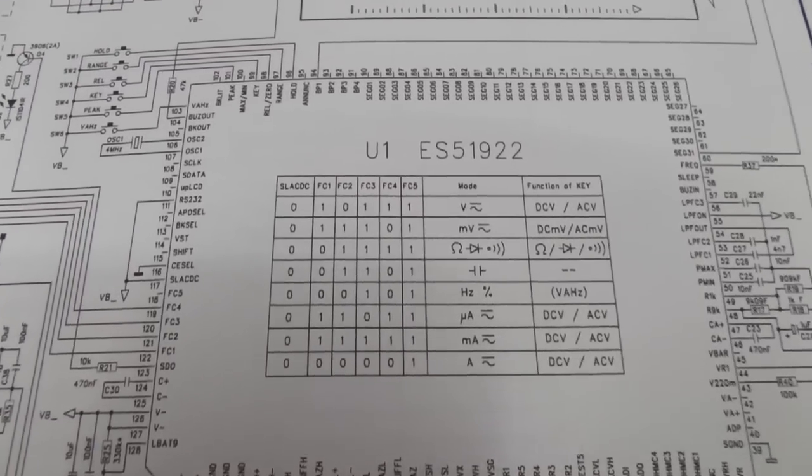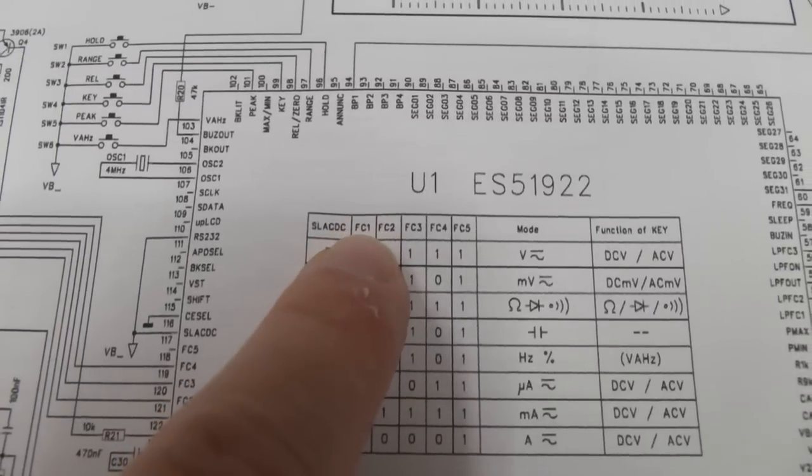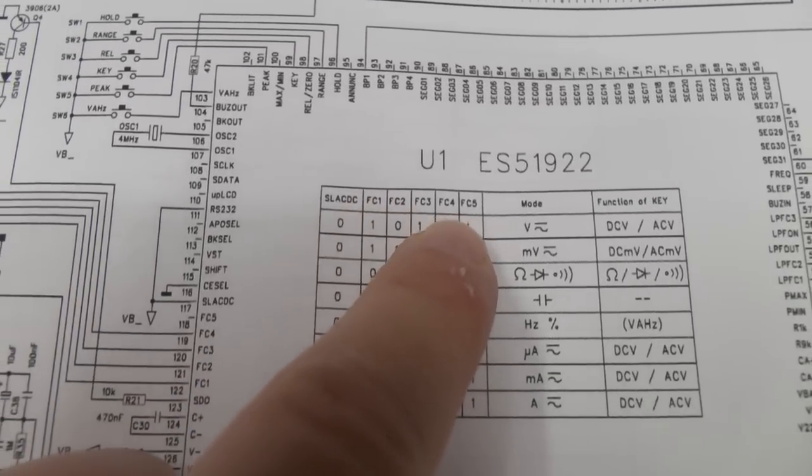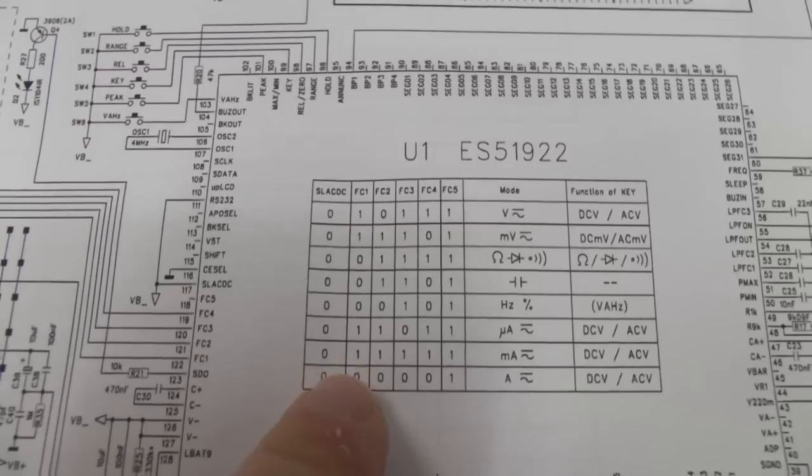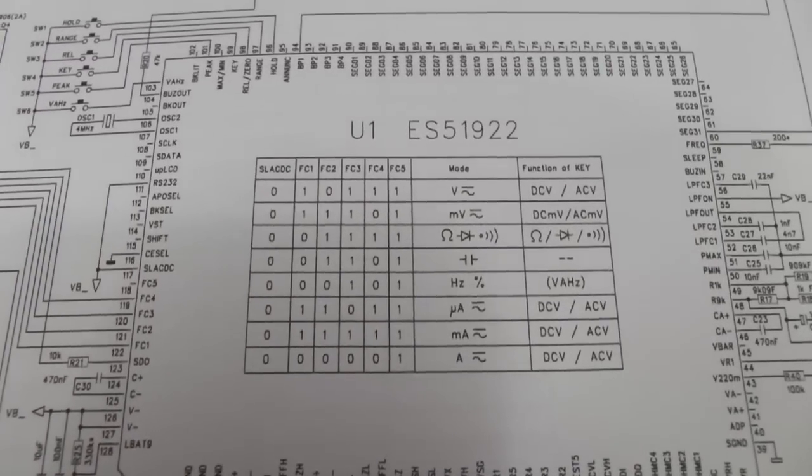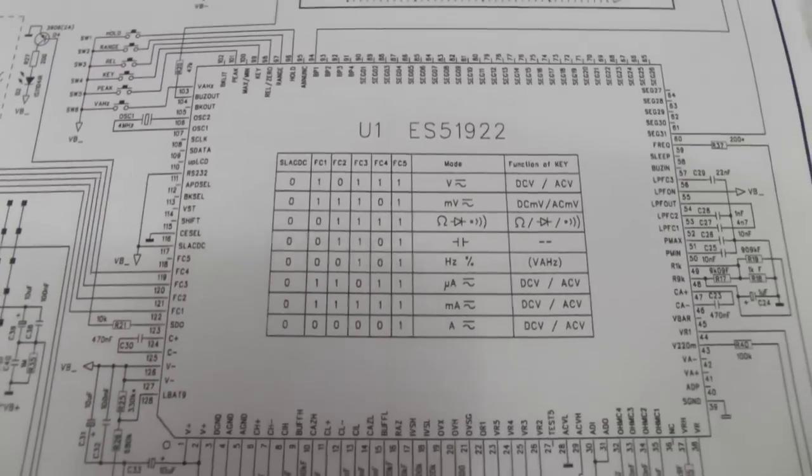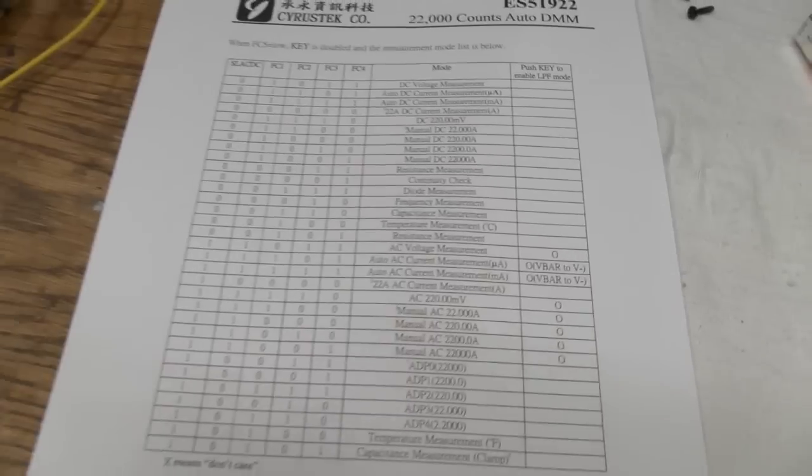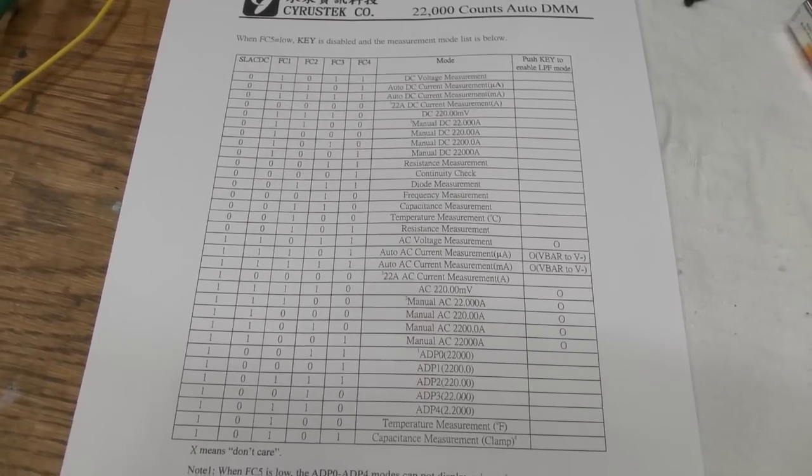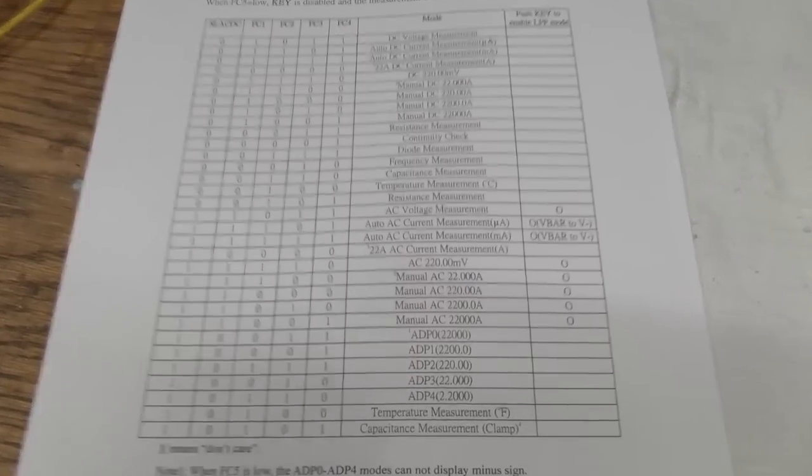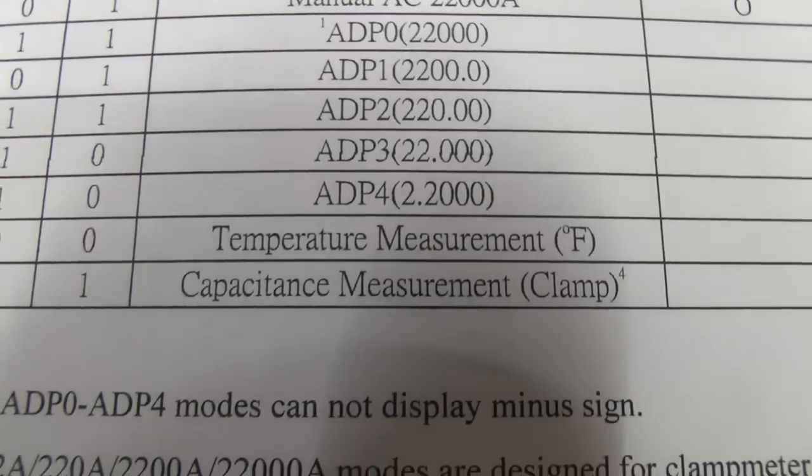The simple conclusion is FC1 and FC4 are always low, they're always zero. Consequently, the meter is not going to work properly. If we take a look at the full function table that is only present in the datasheet, that also explains why we suddenly have a temperature measurement mode.